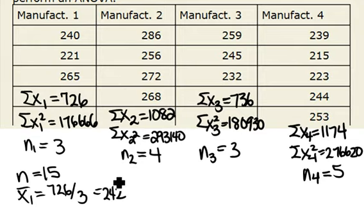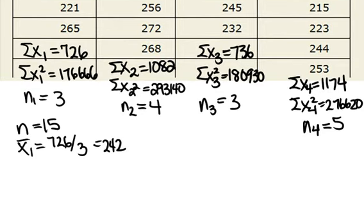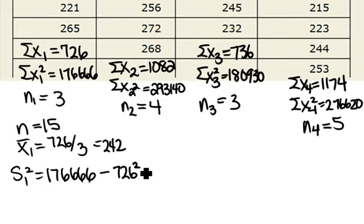To find our variance for group one, what we do is take our sum of our data squared, which is 176666, subtract our 726 squared divided by our sample size of 3, and then divide by n minus 1, which is 2, and what we should get for this is 487. Now we need to do that for each of the groups, so I'll complete that step next.